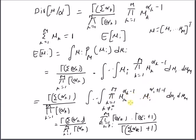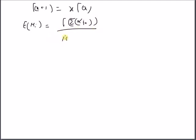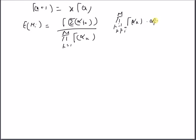Rearranging with simple algebraic manipulations and using the relation gamma(x+1) = x times gamma(x), the expected value of mu_i equals the gamma of the summation of alpha_k, divided by the product of gamma of alpha_k for k=1 to m, times the product of gamma of alpha_k for k not equal to i, times alpha_i times gamma(alpha_i), divided by the summation of alpha_k for k=1 to m.